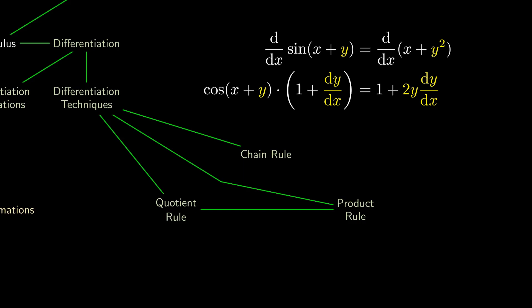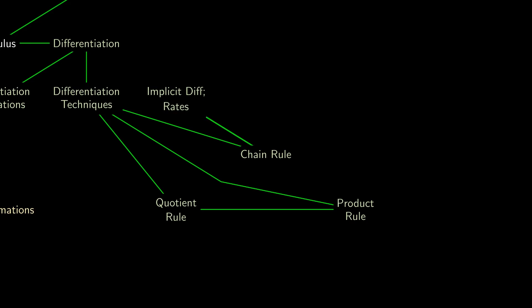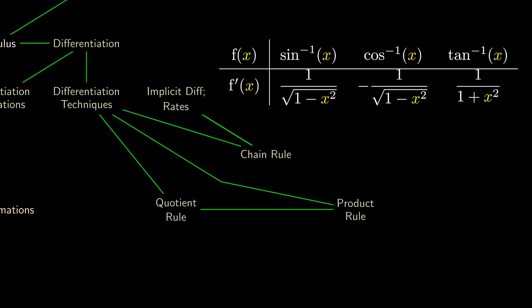Likewise, we can compute on the right-hand side and simplify using some algebra to obtain the derivative of y with respect to x, even though there was no real way that we could have isolated y. This technique, known as implicit differentiation, allows us to derive the derivatives of several inverse trigonometric functions, which are formulas that are new in the A-levels.